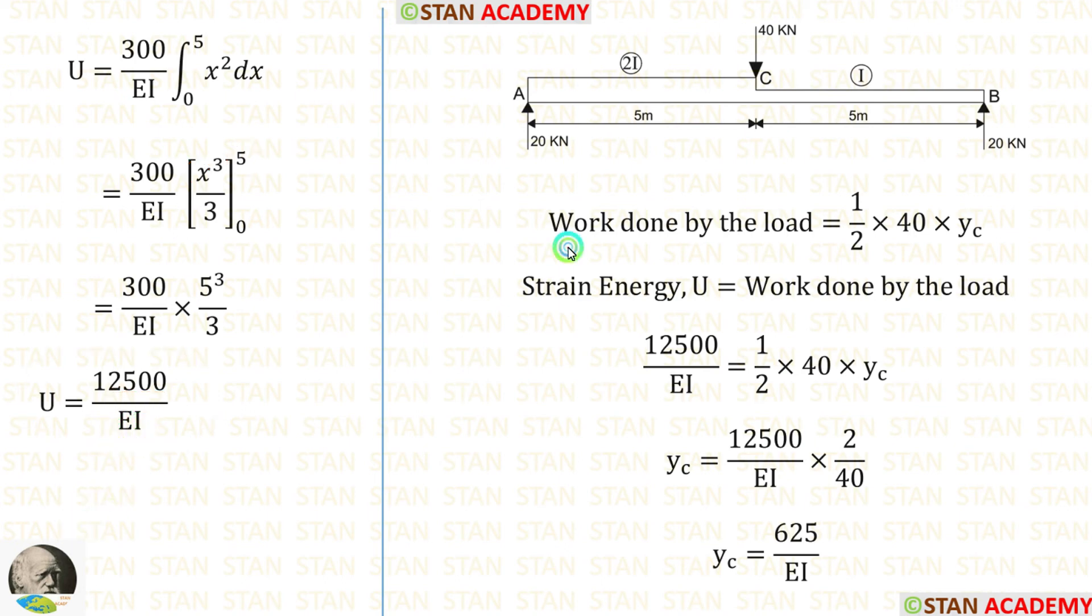We know the formula for the work done by the load: half into load into deflection. In this beam, we are going to calculate the deflection under the point load, 40 kN. So, for the load, we have to apply 40. We know that strain energy is equal to work done by the load. So, we can equate the value of U and the work done by load. We can take 40 and 2 on the left side. 2 will come in the numerator and 40 will come in the denominator.